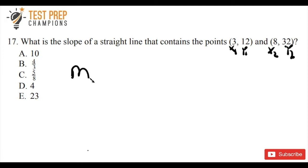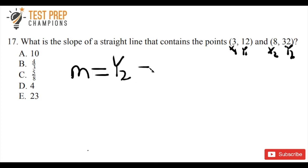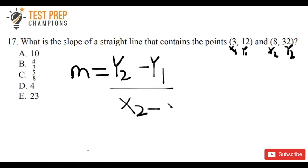The symbol for slope is just an m. So the formula for slope is: m equals y2 minus y1, over x2 minus x1.